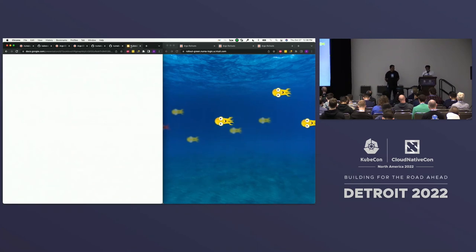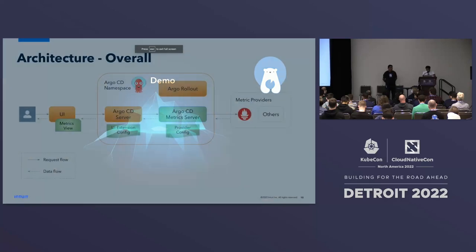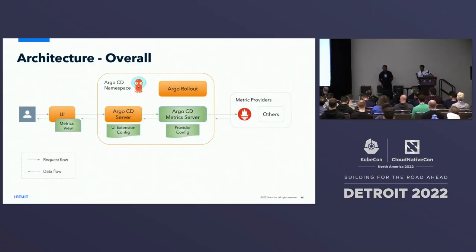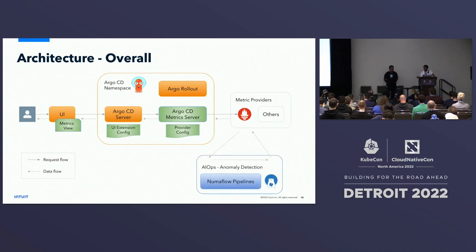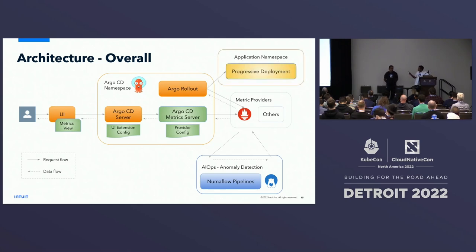Now let me get into the architecture. When a user loads the Argo CD UI, it talks to the Argo CD server. Here we use the Argo CD extension framework to check whether observability has been turned on. We developed a new component called the Argo CD metrics server, which can pull metrics from any service provider you have — at Intuit we use Prometheus, but it can talk to any provider. This is a decoupled architecture. To surface the anomaly score, the Muma Proj just needs to write the anomaly back to Prometheus, and that's how the AIOps tab is fed. To do Argo Rollouts, all you need is the analysis template pulling from Prometheus, and Muma Proj writes another anomaly score just for the canary deployment so Argo Rollouts can make the rollback decision.